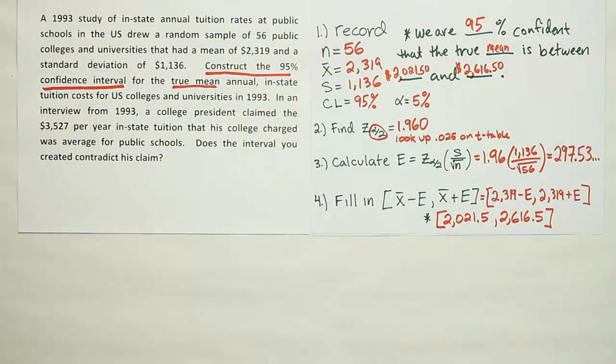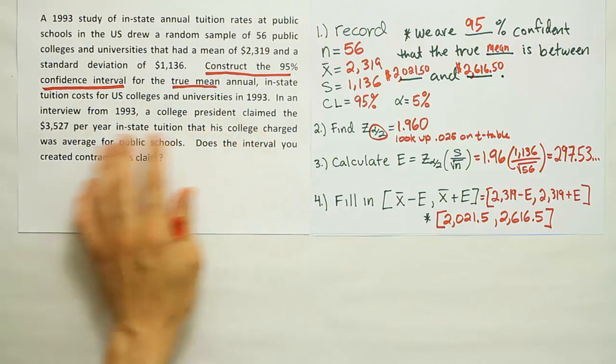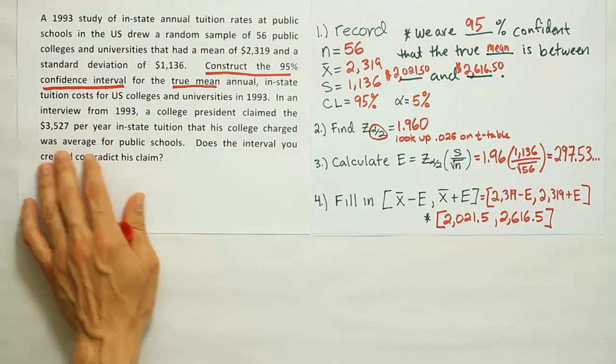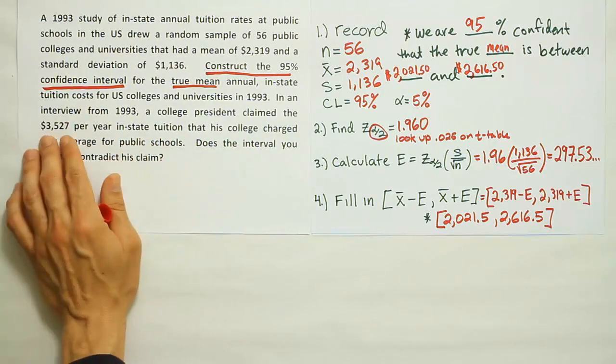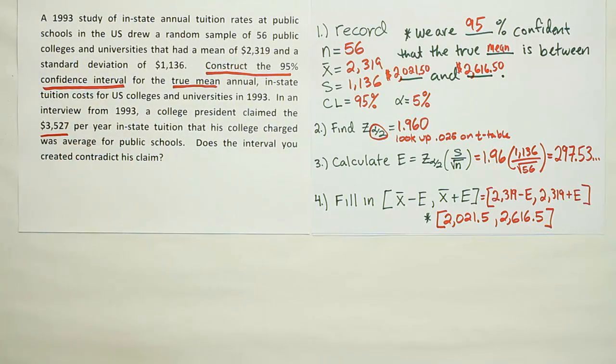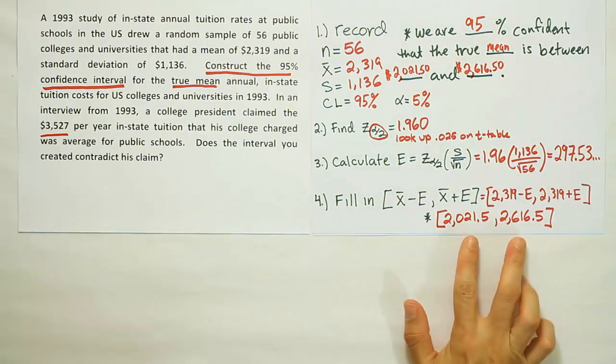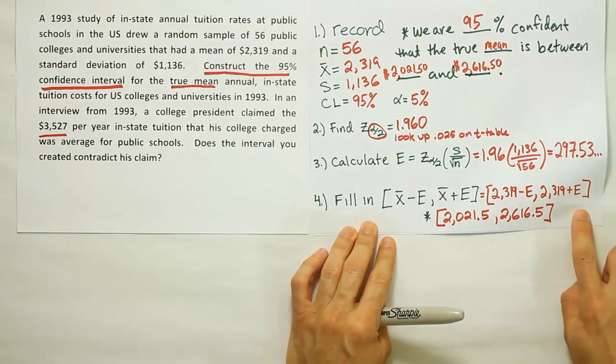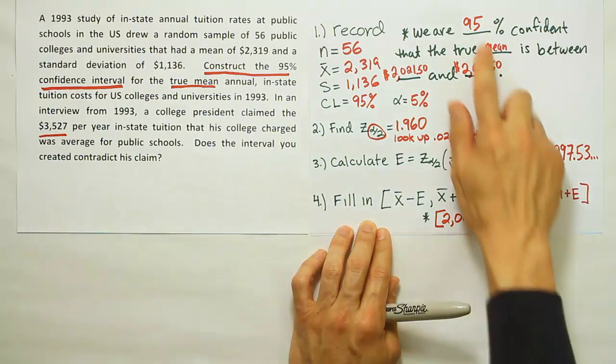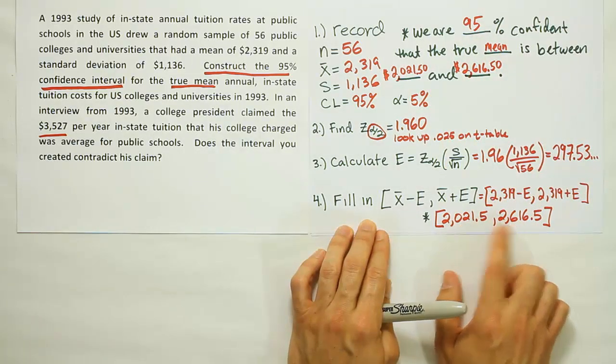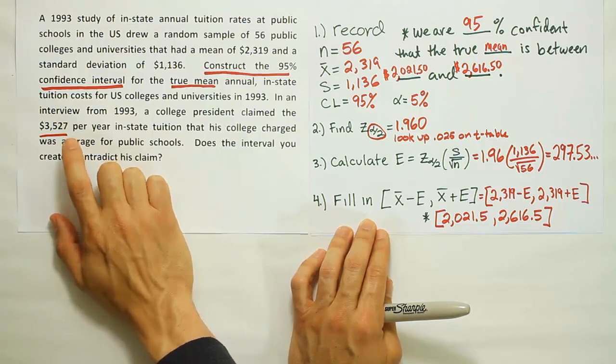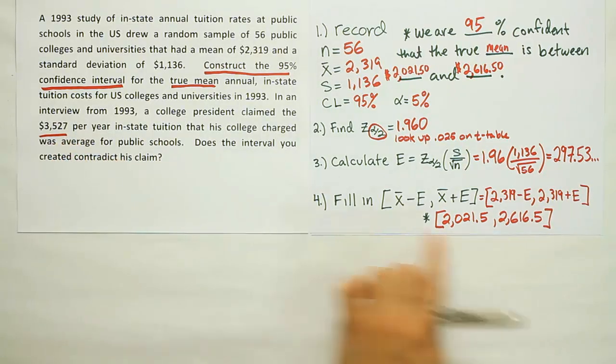Let's compare that to what they asked us about here. They said finally that in an interview from 1993, a college president claimed that the $3,527 per year in-state tuition that his college charged was average for public schools. Well, if we look at that number, the $3,527 number, it's actually outside of the interval, isn't it? It's above this interval. So if this was an interval on the number line, $3,527 is on the outside of it. It's on the outskirts of that, which means it's outside of the interval. Remember, we're 95 percent confident that the true population mean is within this span. This college president says that was the average in 1993. This number is not inside the interval, so this interval contradicts his claim.